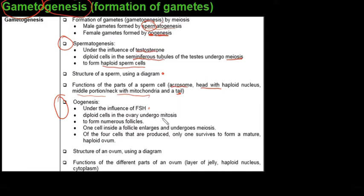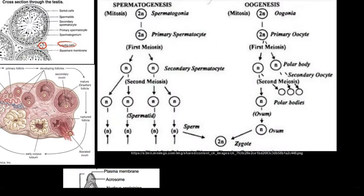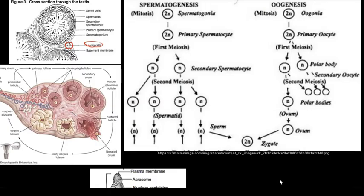In oogenesis, this happens under the influence of FSH, the follicle stimulating hormone. Diploid cells in the ovary undergo mitosis first - not meiosis - forming many follicles. One cell inside a follicle will enlarge and undergo meiosis, and of the four cells produced only one survives to form a mature haploid ovum. You also need to draw and label an ovum, specifically the jelly layer, the nucleus, and the cytoplasm.